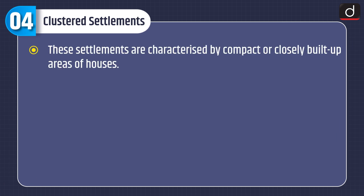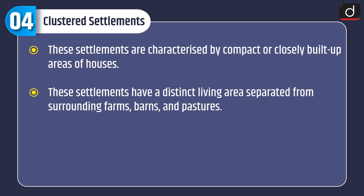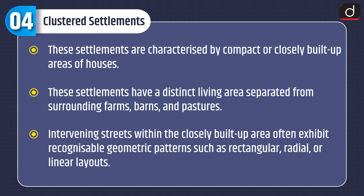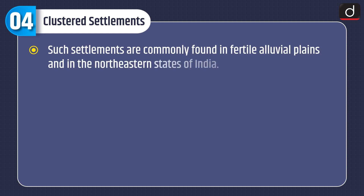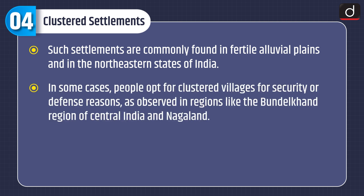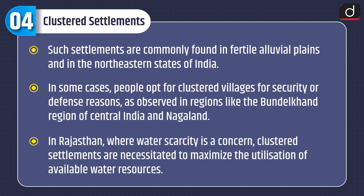Clustered settlements are characterized by compact or closely built-up areas of houses, with a distinct living area separated from surrounding farms, barns and pastures. Intervening streets often exhibit recognizable geometric patterns such as rectangular, radial or linear layouts. Such settlements are commonly found in fertile alluvial plains and in the northeastern states of India. In some cases, people opt for clustered villages for security or defense reasons, as observed in the Bundelkhand region of central India and Nagaland. In Rajasthan, where water scarcity is a concern, clustered settlements are necessitated to maximize the utilization of available water resources.